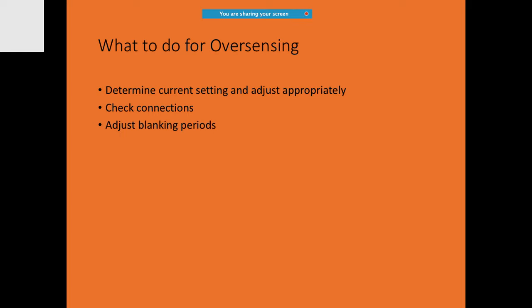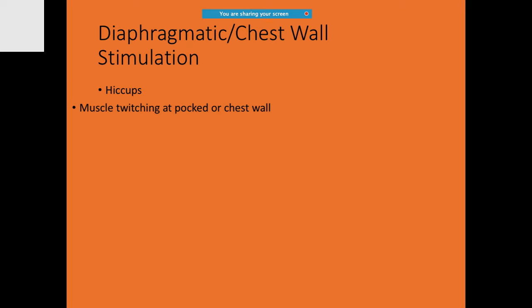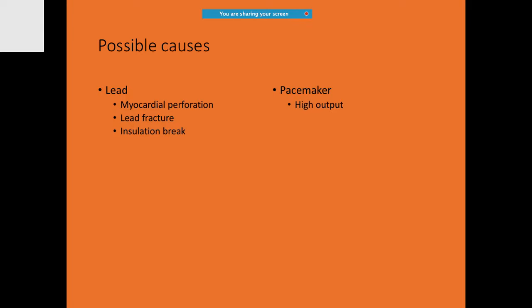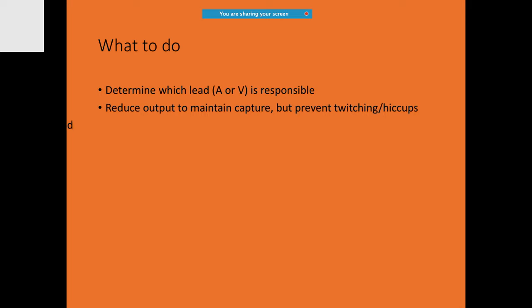If oversensing is occurring, check connections and adjust blanking periods. Diaphragmatic or chest wall stimulation may cause hiccups, which can be intermittent. This is often due to lead issues — myocardial perforation, lead fracture, or insulation break. The pacemaker output may need to be reduced to maintain capture.